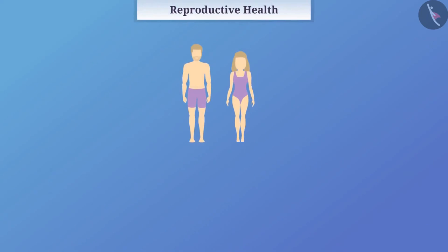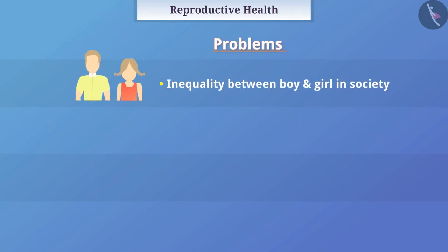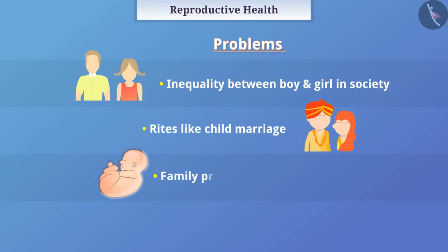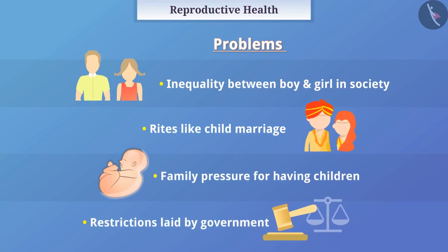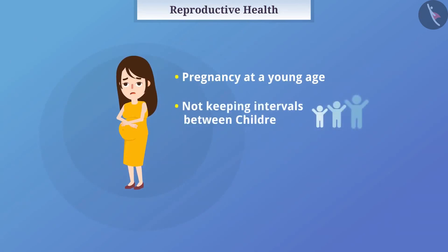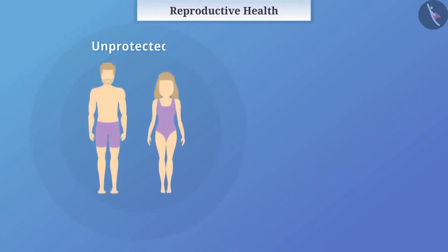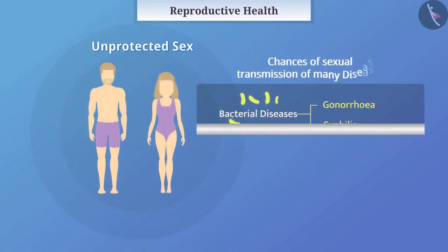Reproductive health refers to all aspects of reproduction such as physical, emotional, practical, and social health. There can be many problems related to reproductive health such as inequality between boys and girls in society, child marriage, family pressure for having children, and restrictions laid by government. Pregnancy at a young age or not keeping intervals between children often causes adverse effects on the physical health of the woman. If pregnancy occurs against the woman's will, it can cause mental, physical, and financial problems. Unprotected sex also increases the chances of sexual transmission of many diseases.